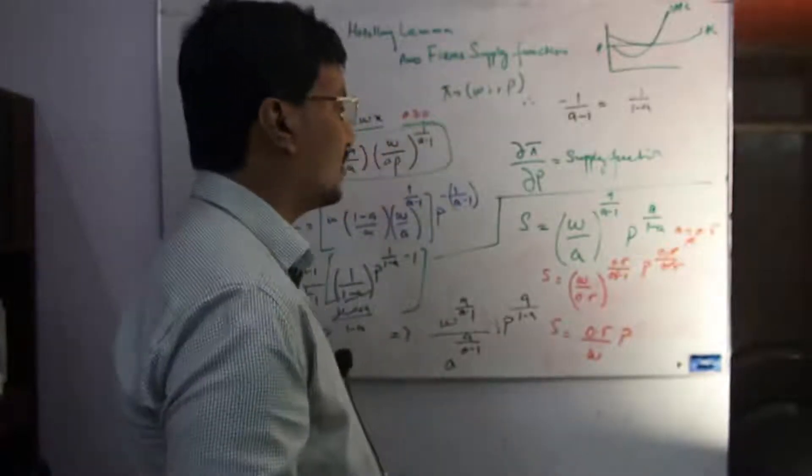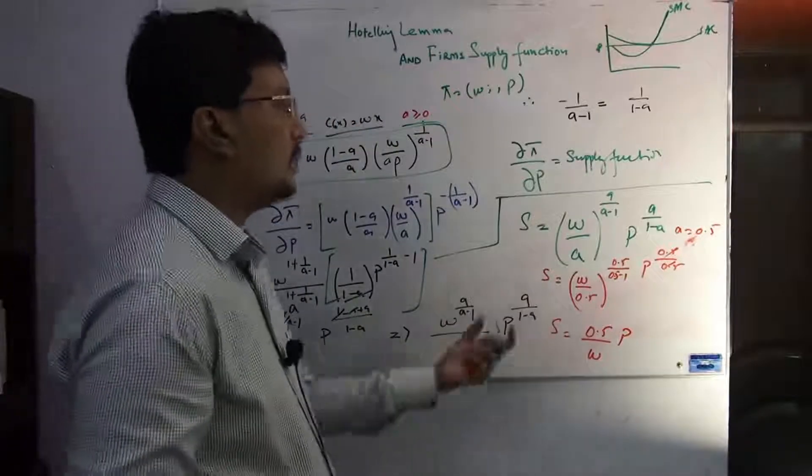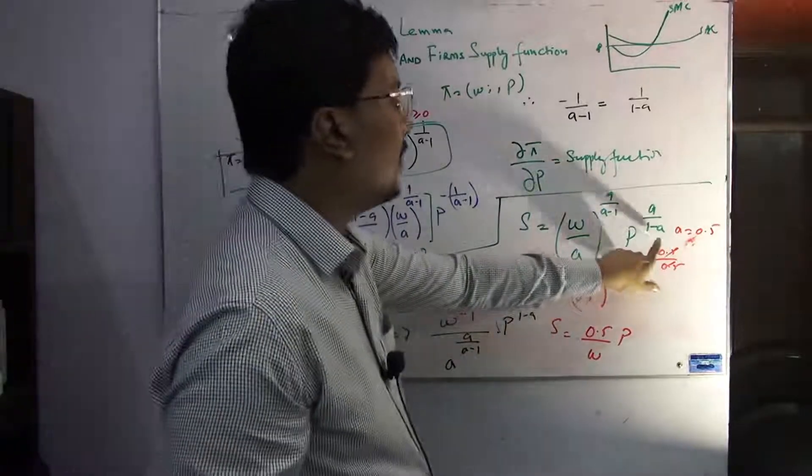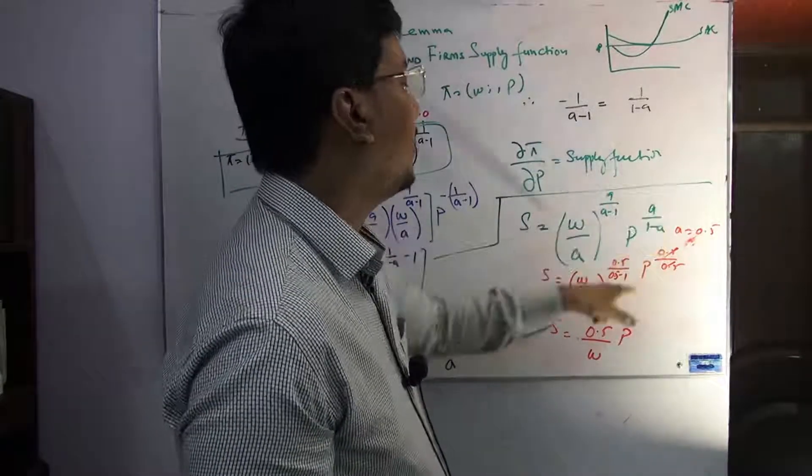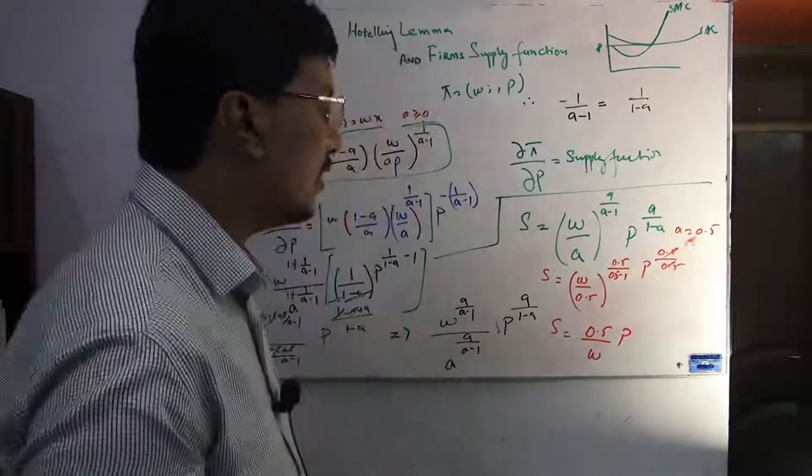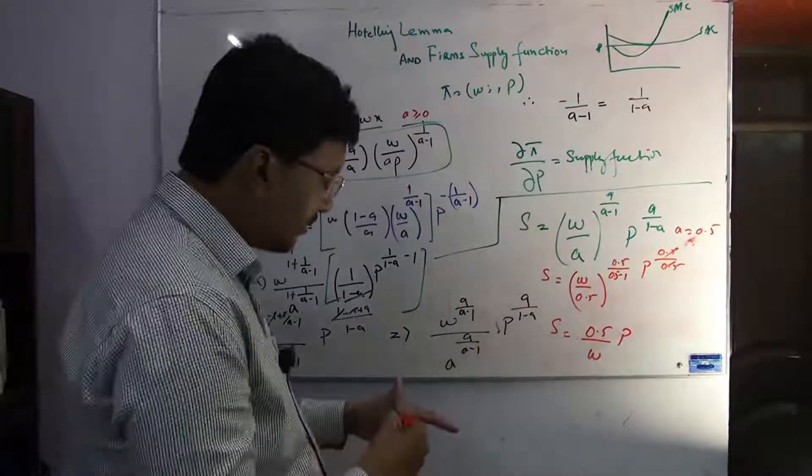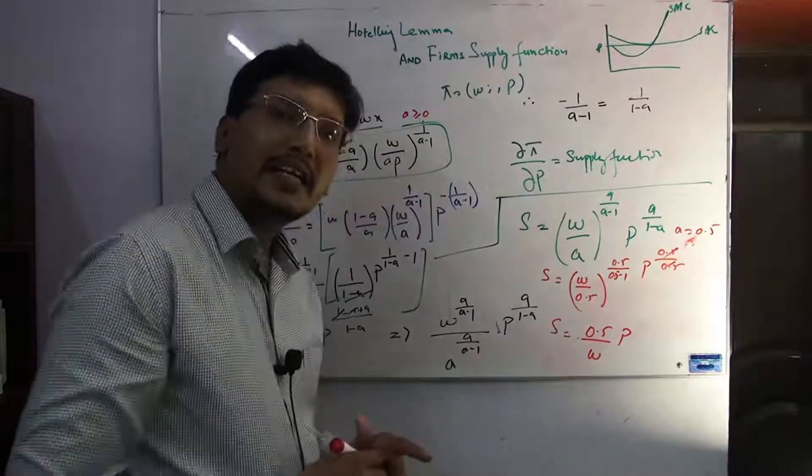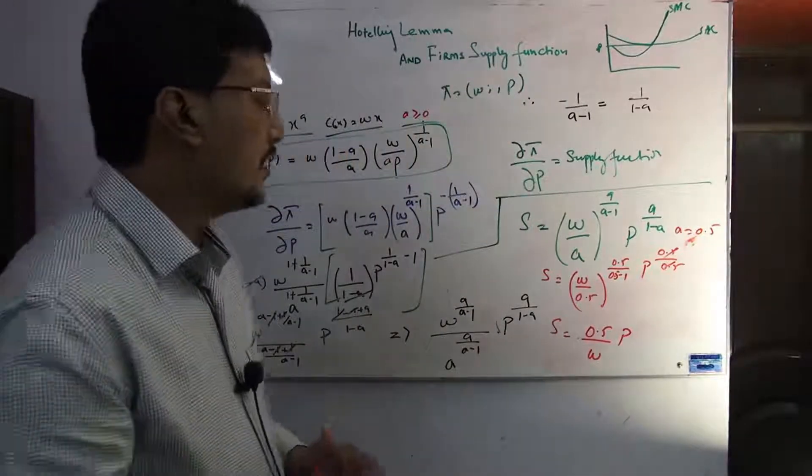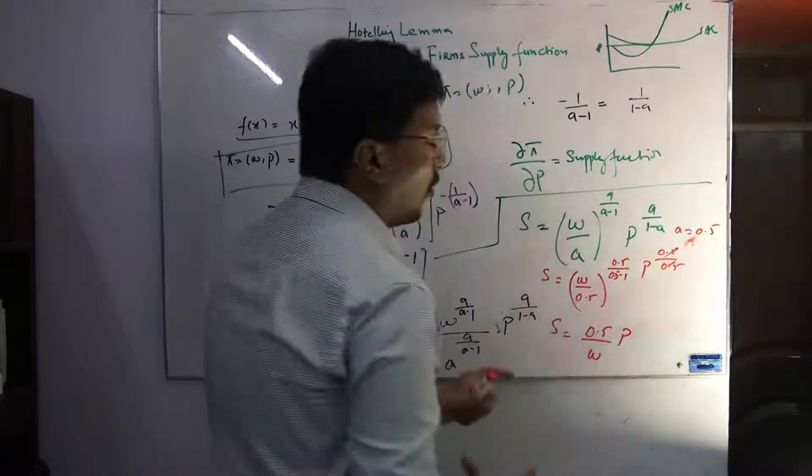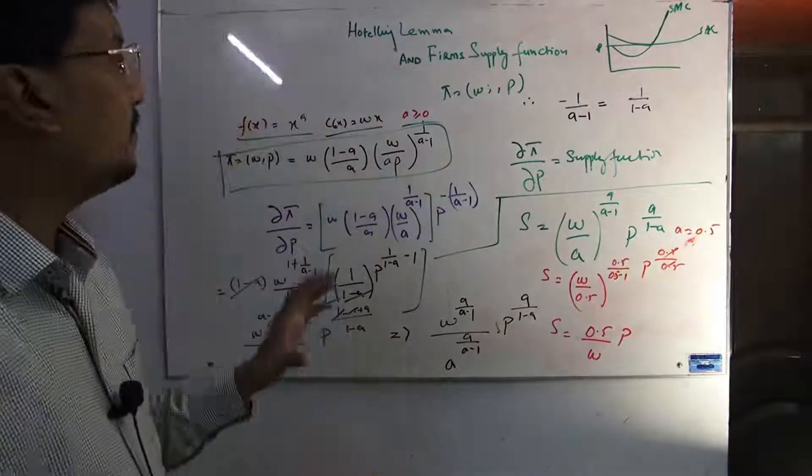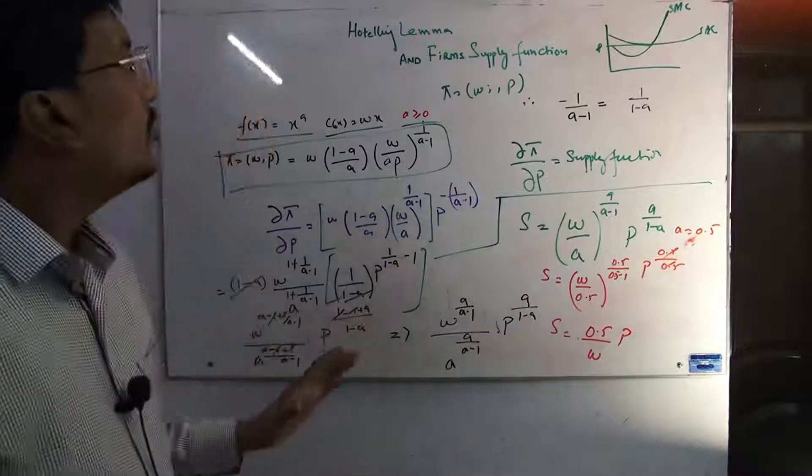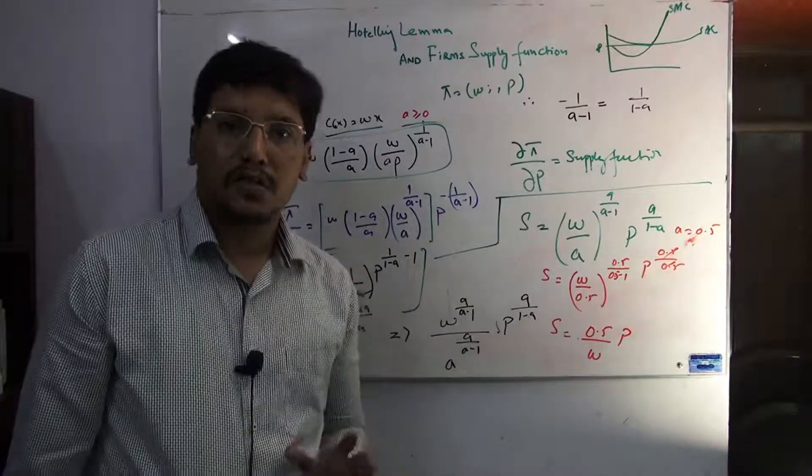If you put 1, then when you put 1, the price becomes 1 divided by 1, leaving just the numerator, so it solves. In this condition, you can see that S is inversely proportional with w and directly proportional with the commodity price. So it is a very useful technique of the Hotelling lemma to find out the firm supply function.